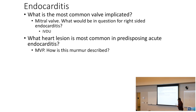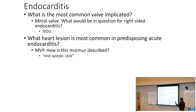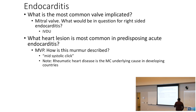Mitral valve prolapse is described on the USMLE as a mid-systolic click. Rheumatic heart disease is the most common underlying cause in developing countries, but here we think about mitral valve prolapse.